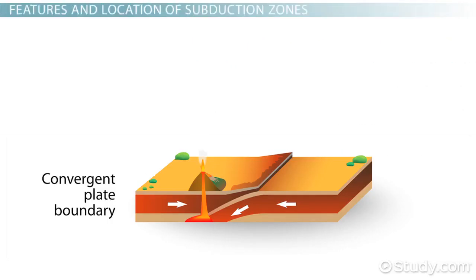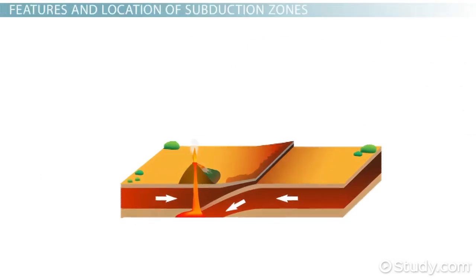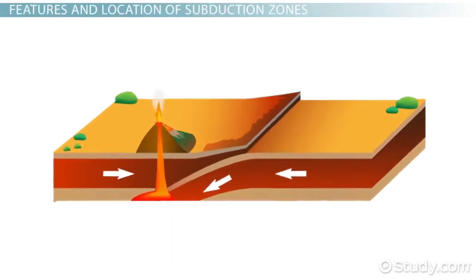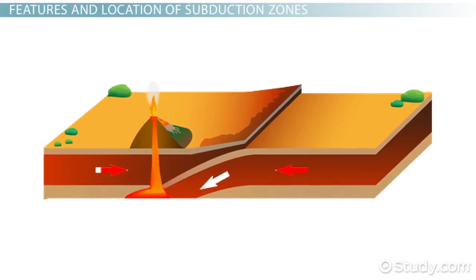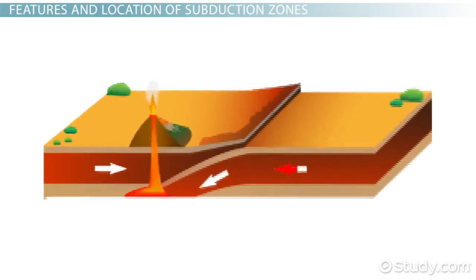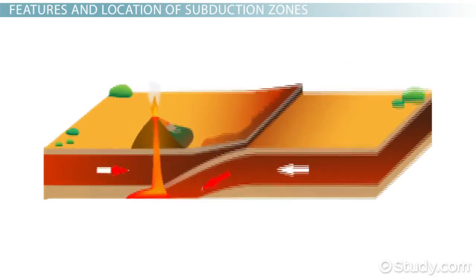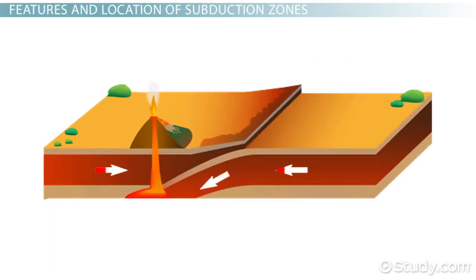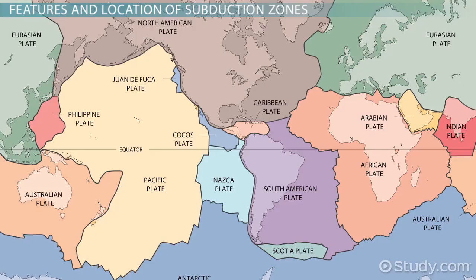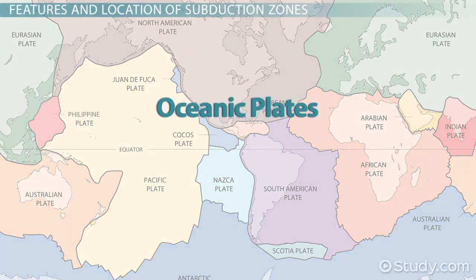Subduction zones are places of high activity. When two huge tectonic plates collide, the pressure and friction is great enough that the material in the earth's mantle can melt, and both earthquakes and volcanoes can result. The exact features around a subduction zone depend on the type of tectonic plates that are colliding. There are two kinds: oceanic plates and continental plates.